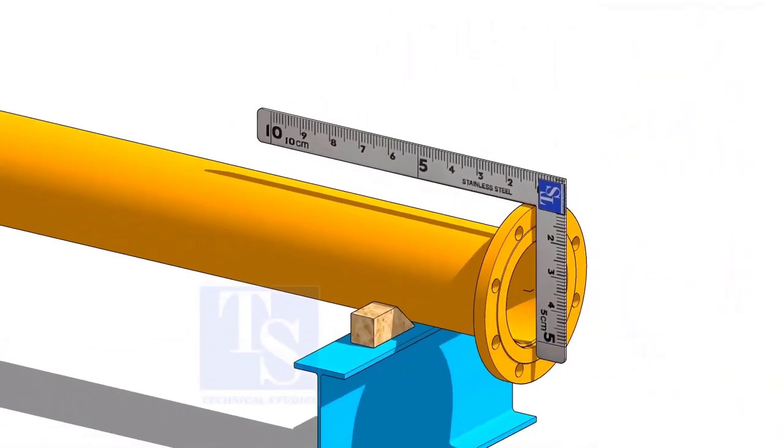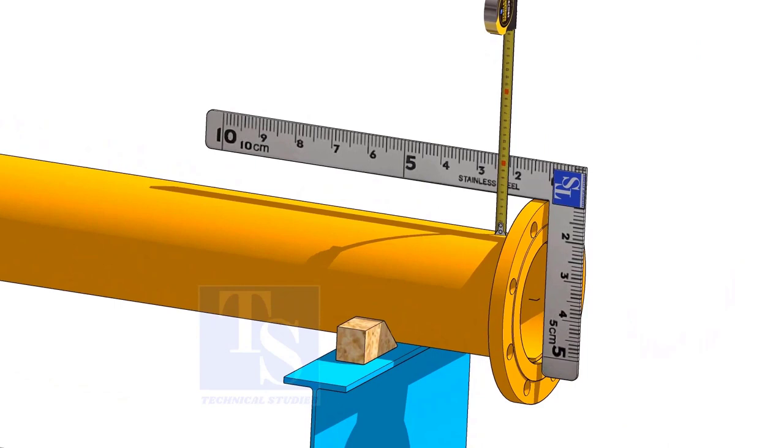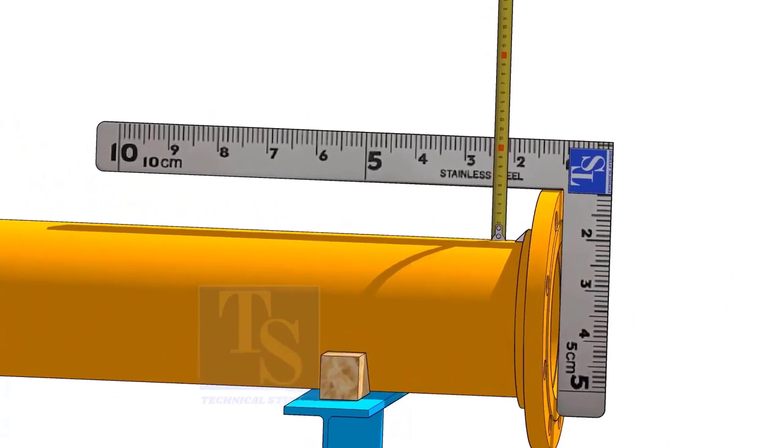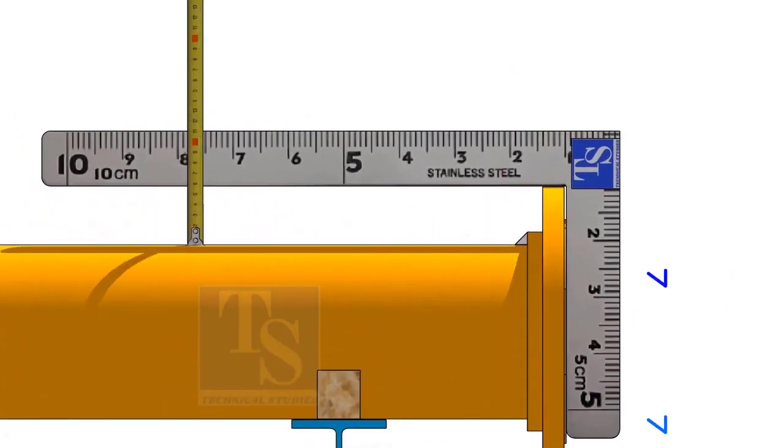Hold a right angle on the face of the flange and check the distance as shown. Adjust the face level of the flange to make the distance equal.